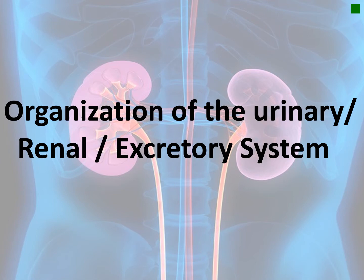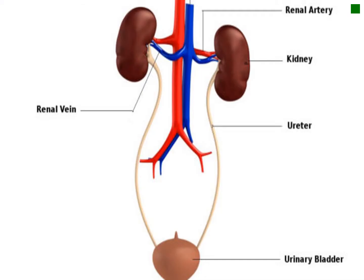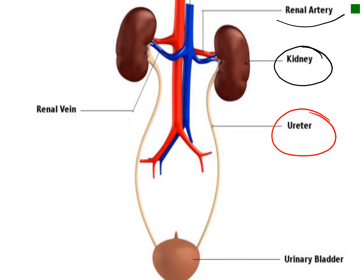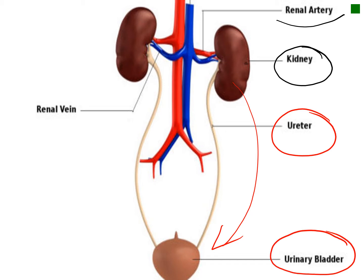Here we have the organization of the renal system: the renal artery, the kidneys as the site of urine formation, the ureter which allows passage of urine from the kidneys toward the bladder, the urinary bladder as the site of storage of urine, the renal vein, and finally the urethra where urine passes from the urinary bladder outside the body.